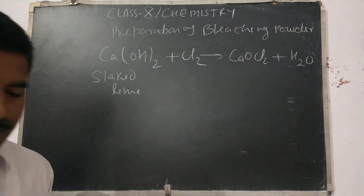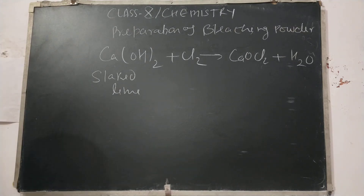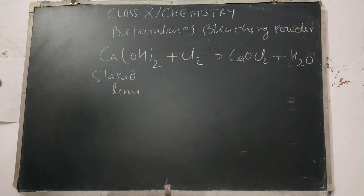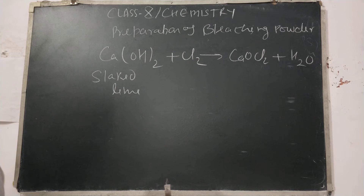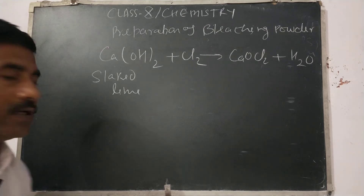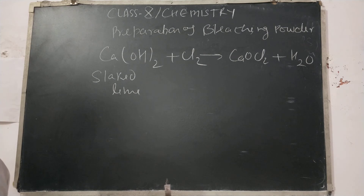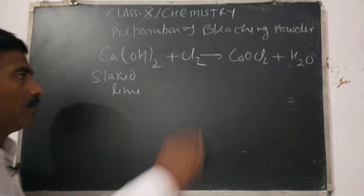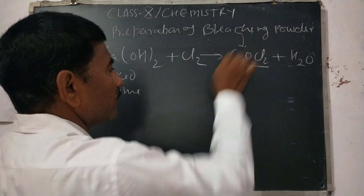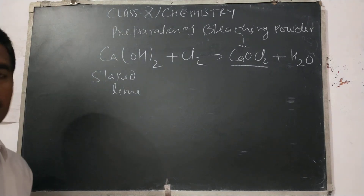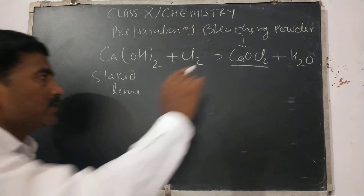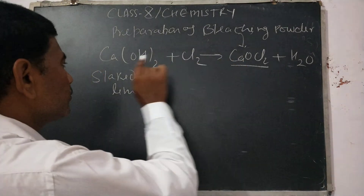Good morning students. Today we are going to discuss the preparation of bleaching powder. It is prepared by slaked lime and chlorine gas. When chlorine gas is passed into slaked lime, bleaching powder is formed. The chemical name of bleaching powder is calcium oxy chloride, CaOCl₂.